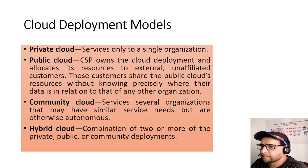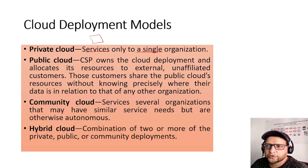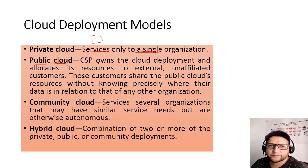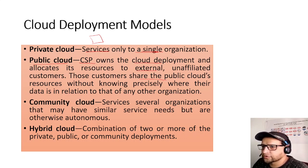Cloud deployment models: Private cloud serves only a single organization — for example, a bank concerned with security can have hardware dedicated only to them. Public cloud has hardware shared between multiple organizations via multi-tenancy. The CSP owns the deployment and allocates resources to external customers who share the public cloud's resources without knowing precisely where their data is relative to other organizations. You have less control here.